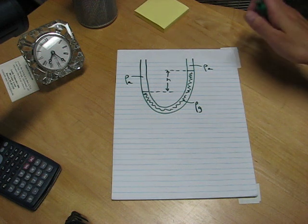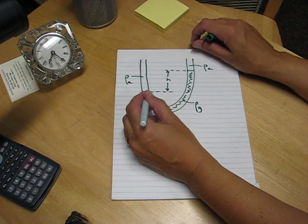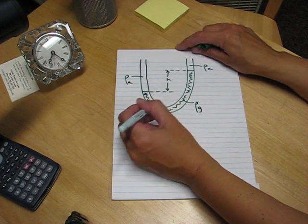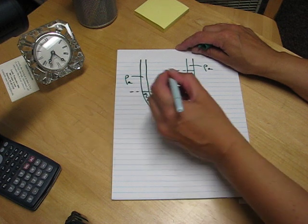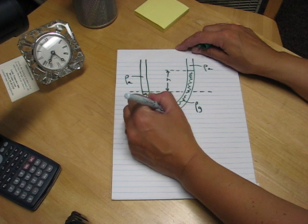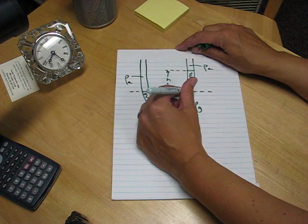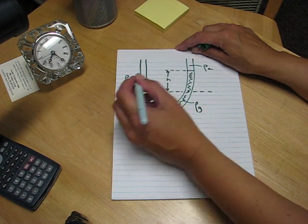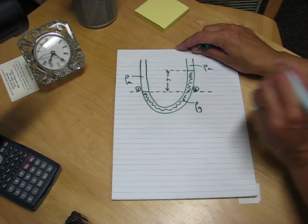The key way to analyze this problem is to recognize that when I look at this fluid in this lower part, at this level, because this is all the same fluid and they're at the same level, the pressures at points 1 and 2 must be the same.